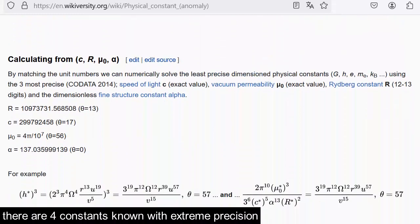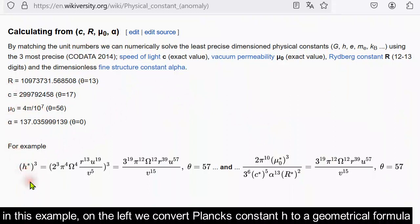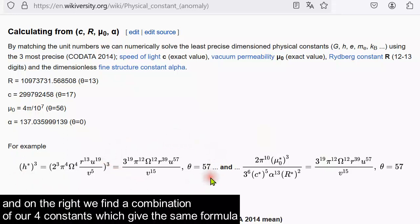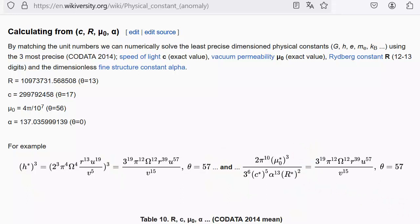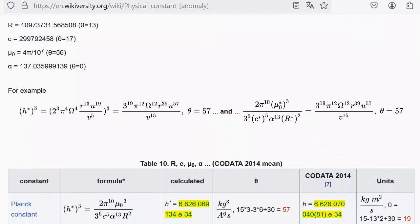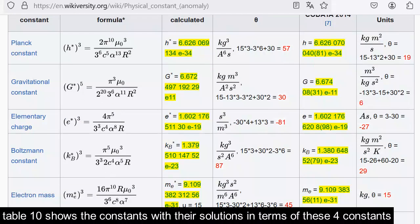There are four constants known with extreme precision. We first convert these into geometrical forms and then use them to solve our least precise constants. In this example on the left, we convert Planck's constant h to a geometrical formula. And on the right, we find a combination of our four constants which give the same formula. We can then solve h using these four constants. Table 10 shows the constants with their solutions in terms of these four constants.